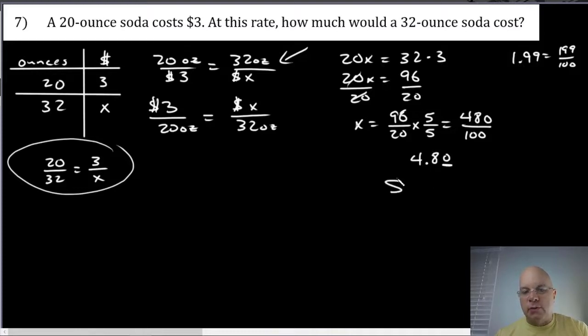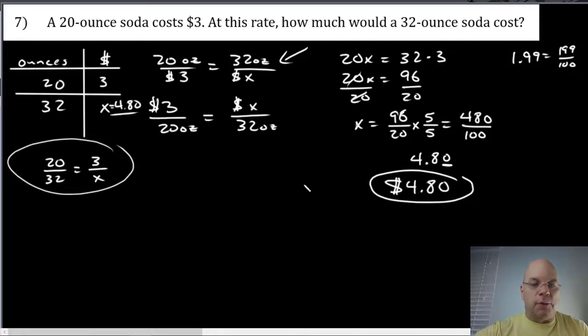The last thing I should do is just double check myself and see whether that answer is reasonable. This 32 ounces is not twice as much as 20, so this should be less than six dollars, and it is. It's a little more than half of 20, so half of three dollars is a dollar fifty. Three and a dollar fifty is four fifty, but it's a little bit more than half, so everything about this answer seems reasonable to me. I'm going to be convinced at that point that my answer is correct.